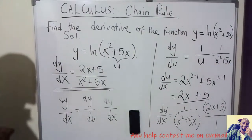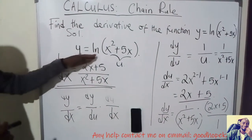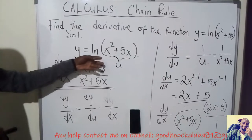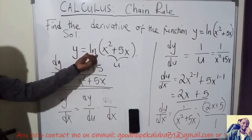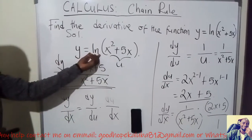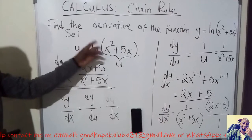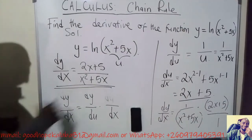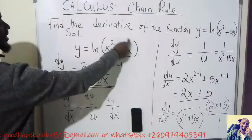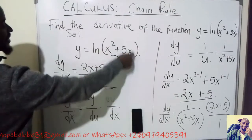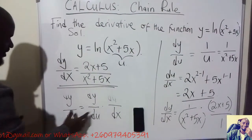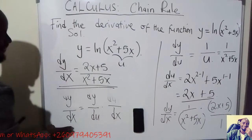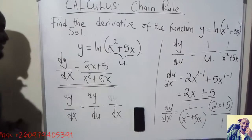So to summarize: if you are asked to find the derivative of a composite logarithmic function, differentiate the outer function ln first — giving 1 over the whole inner expression — then multiply by the derivative of the inner function. Alternatively, you can apply the Chain Rule formula directly; both approaches give the same result.